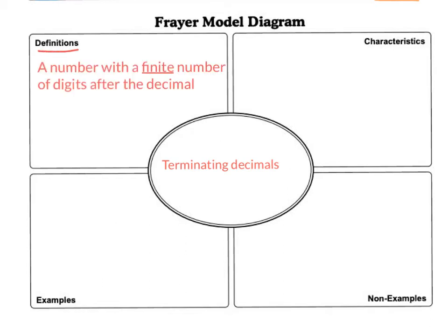So a terminating decimal is a number with a finite number of digits after the decimal. Finite means an exact amount, or it has a limit. It stops. So it has a definite amount of digits after the decimal.